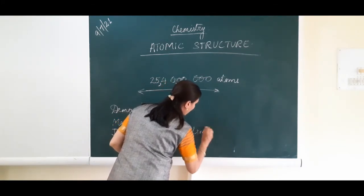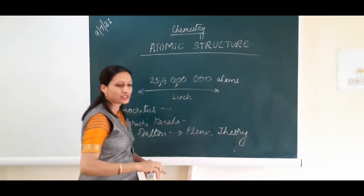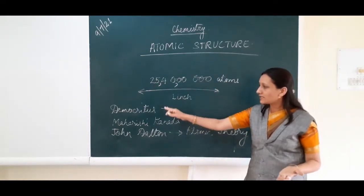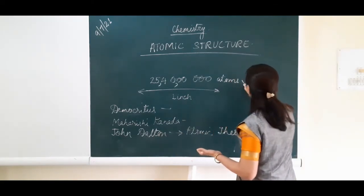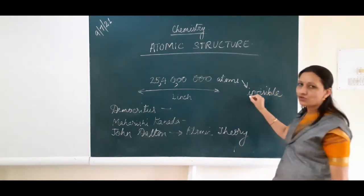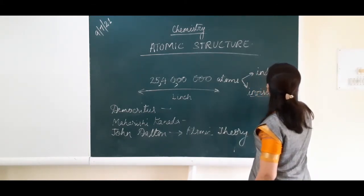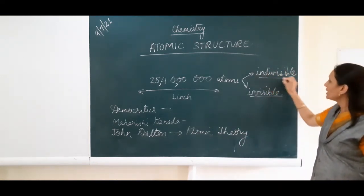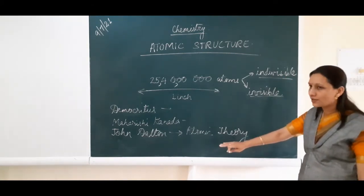John Dalton has given the Atomic Theory and a few salient features are also there. Before discussing the salient features, all these scientific thinkers thought that atom is invisible — you cannot see them with the naked eye. So these are invisible and indivisible, meaning they cannot be divided further. This was one of the salient features of Dalton's Atomic Theory.